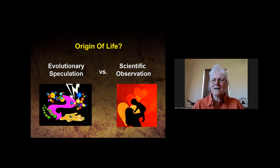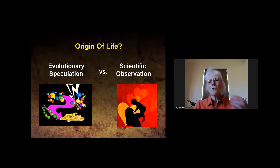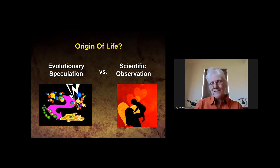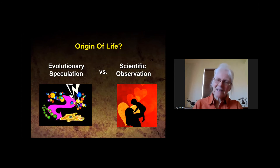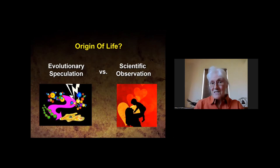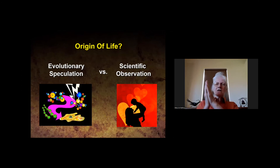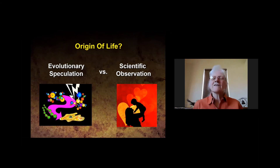Scientific observation says life comes only from life — that's one of the most primary laws in biology, one of the very first things you learn. Where did that pre-existing life come from? Scripture tells us God himself is the origin of life on this planet. You come down to a choice: faith that molecules can turn into human beings with no guidance from the supernatural, or faith in a supernatural creator. Either one requires faith — I choose to believe in the God who created.